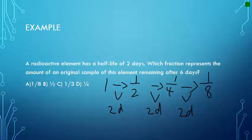Let's look at this example. A radioactive element has a half-life of two days. Which fraction represents the amount of an original sample of this element remaining after six days? The answer is one-eighth. I like imagining that the sample started off with one gram. There's a half-life of two days and the total number of days was six, so there are three half-lives. Each time the element gets cut in half: one-half, one-fourth, and one-eighth. That's how you get your answer.